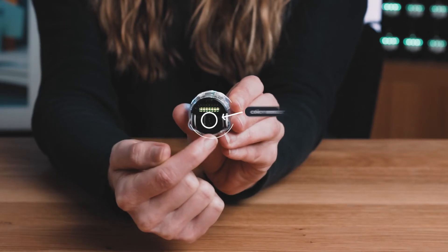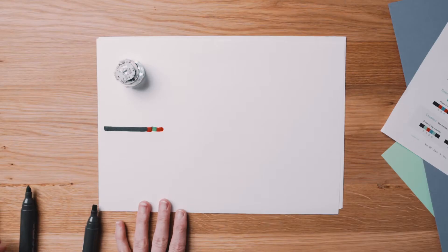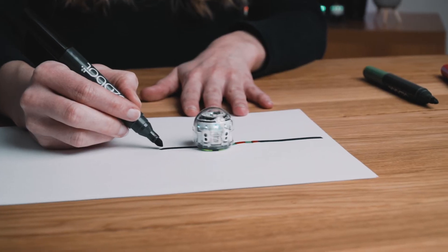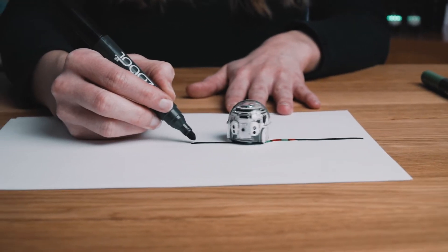And the color sensor in the center sees colors so you can communicate to EVO what you'd like it to do with color codes.